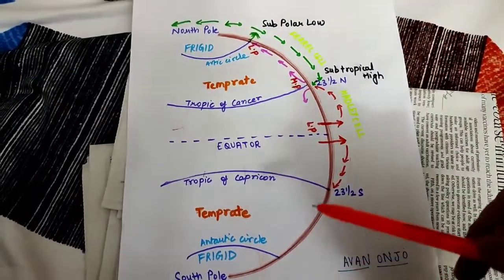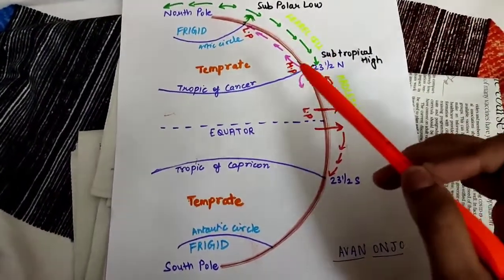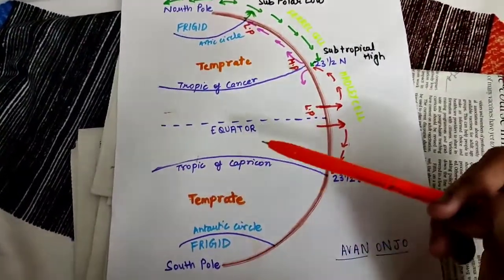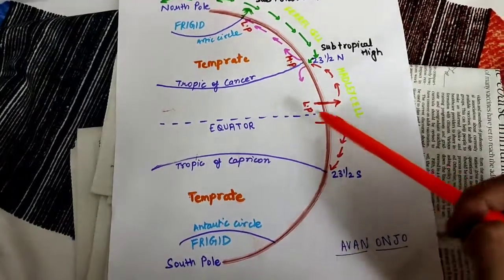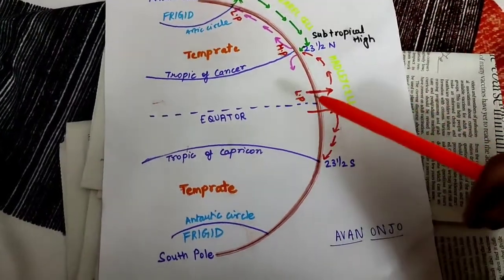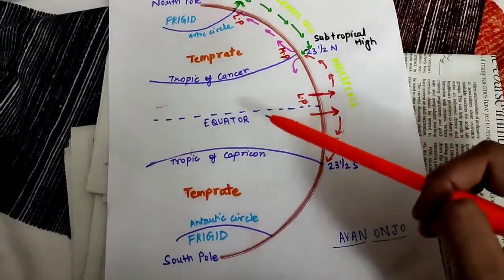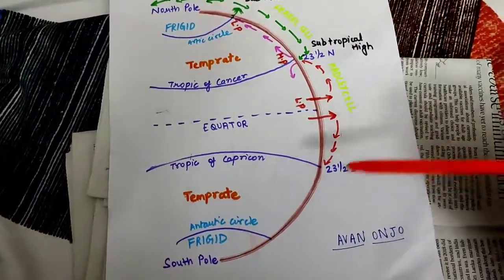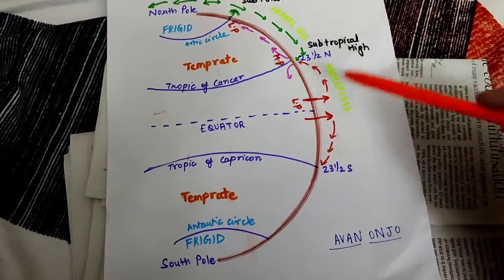Here I have made a diagram of Earth representing the various zones. In the middle there is the equator where vertical rays of sunlight and vertical insolation is received. Then we have Tropic of Cancer and Tropic of Capricorn at 23 and a half degrees north and 23 and a half degrees south respectively.